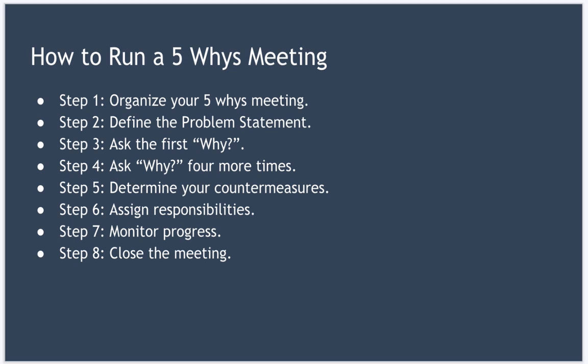If you want to run your own five whys meeting, here are the steps to follow. Step one: organize your meeting — arrange for everyone who might be affected by the problem or have input into its solution to get together. If you're not leading the session yourself, make sure that somebody is. It's the session leader's responsibility to lead the meeting, the process, and to assign people as being responsible for countermeasures. Step two: define the problem statement — at the start of the meeting, define the problem you're trying to solve, and write it on a whiteboard if you can.